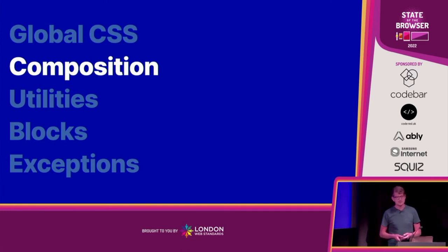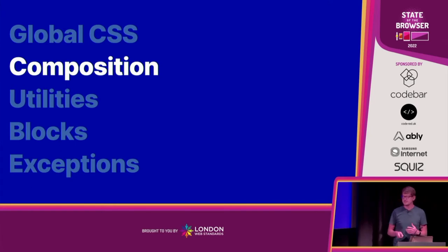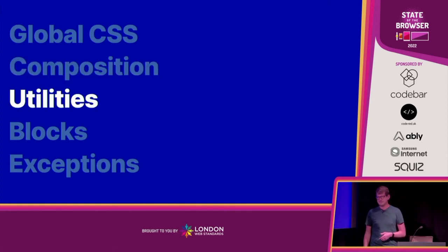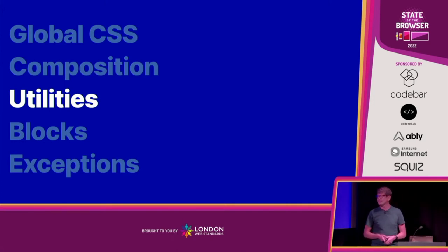Once you've done all the global CSS — hopefully the vast majority of your CSS — you can start to apply detail. The first thing is composition: the idea of a compositional layout is that it's skeletal and it doesn't matter what goes in the layout, the layout just looks after itself and nothing else.